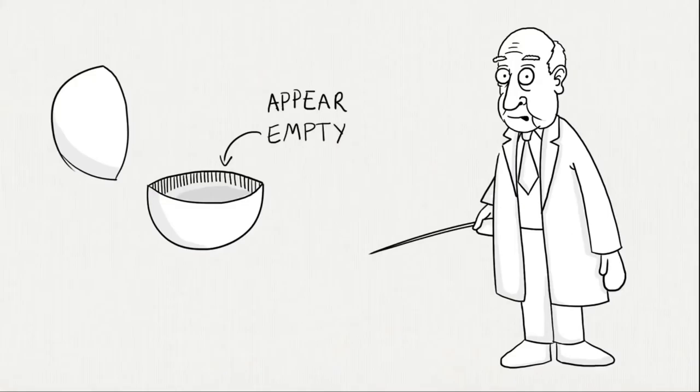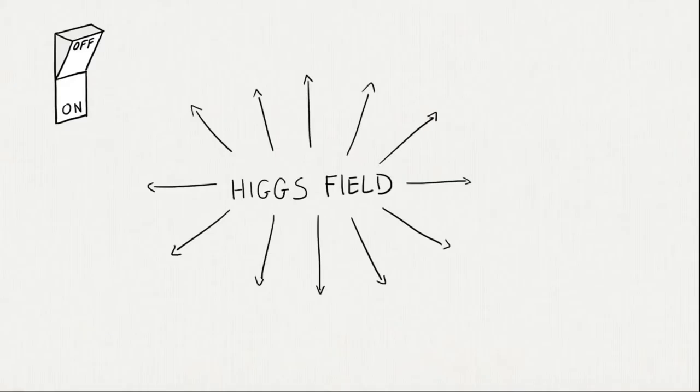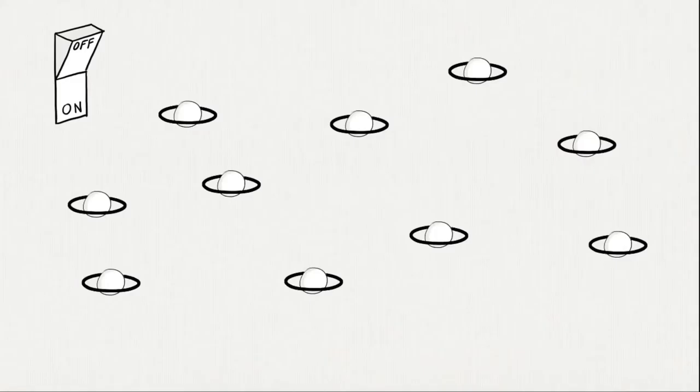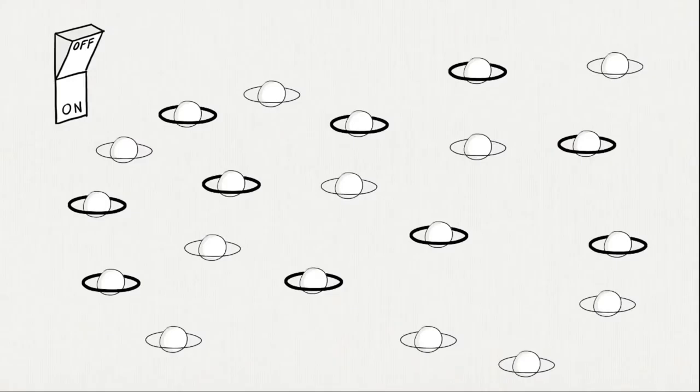He said mass is not stuff, but something like a charge. The charge is given to the particles by an invisible field that is all around us, the Higgs field. Some particles react strongly to it and are given a lot of mass. Other particles are hardly affected by it and get little or no mass at all. Mass causes particles to be attracted to each other, thus forming objects, creating life.